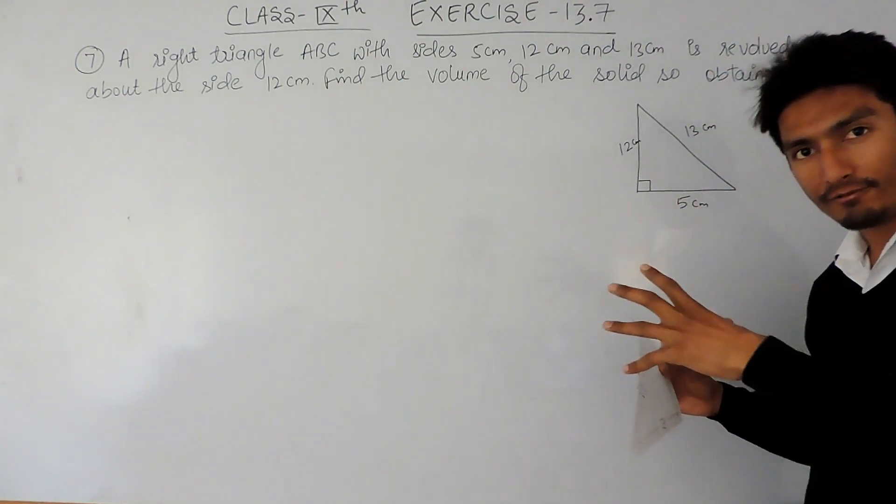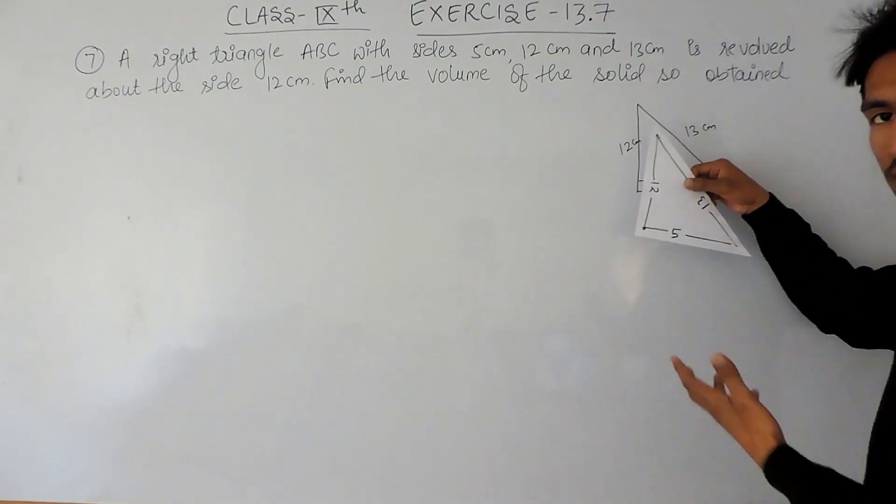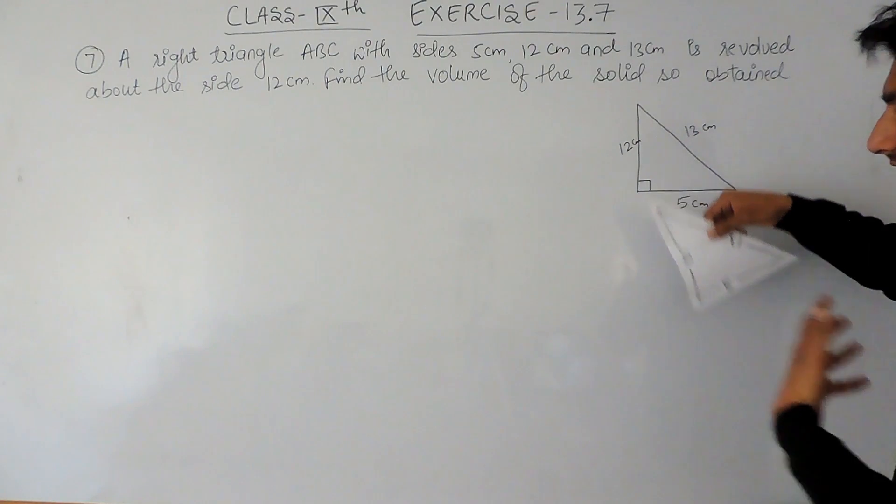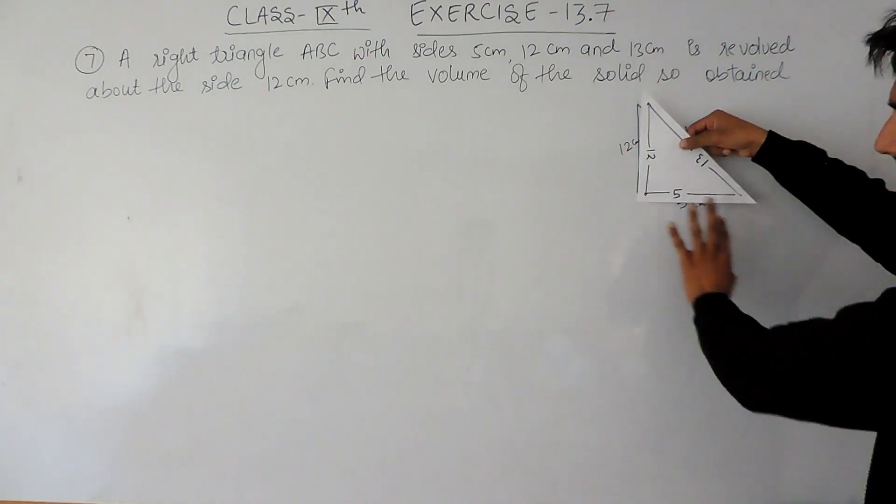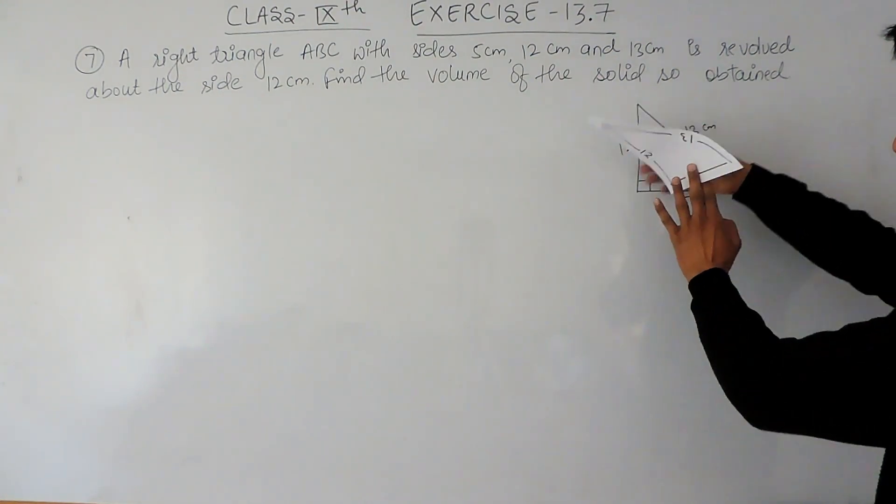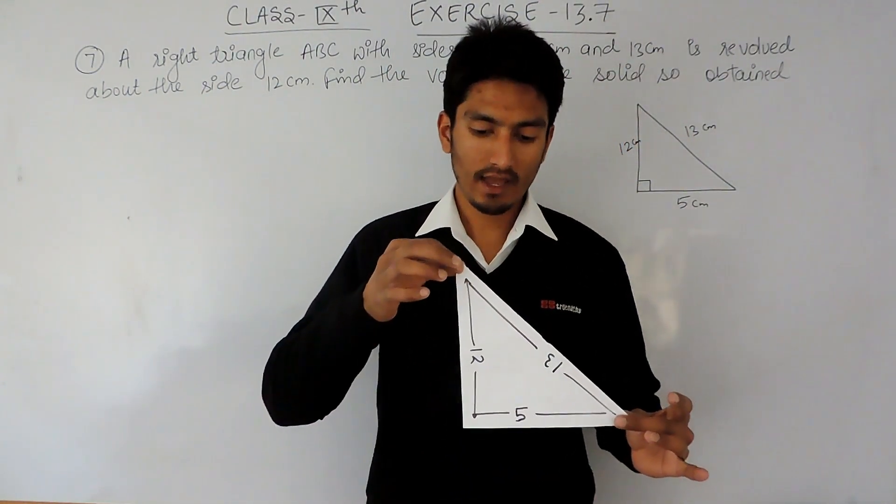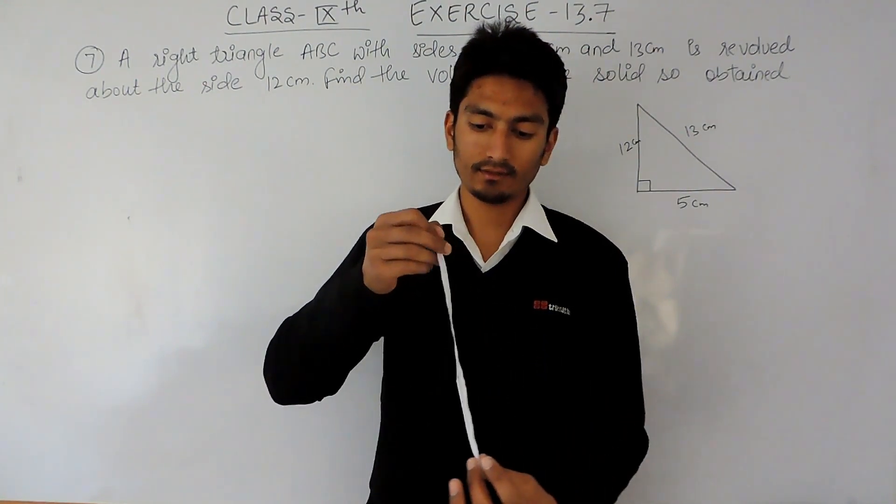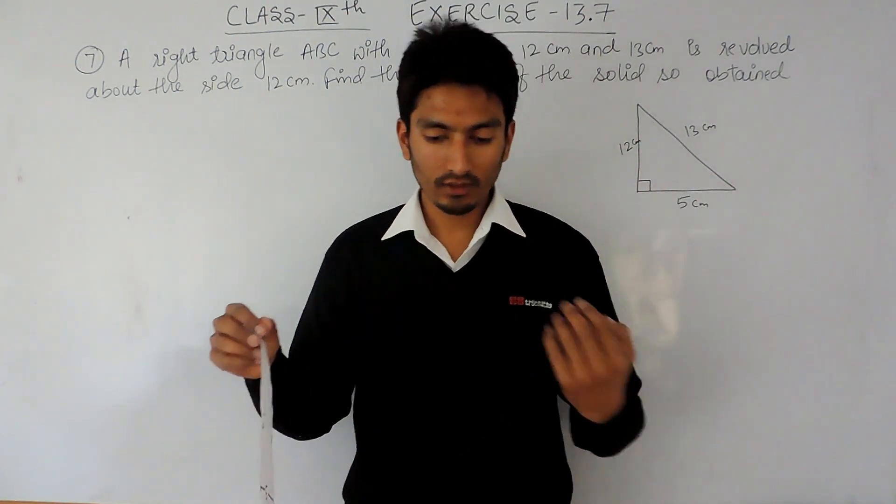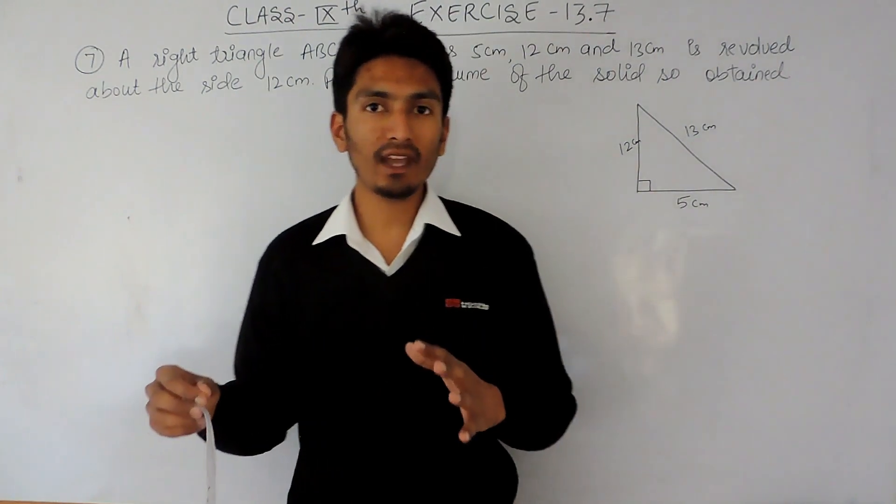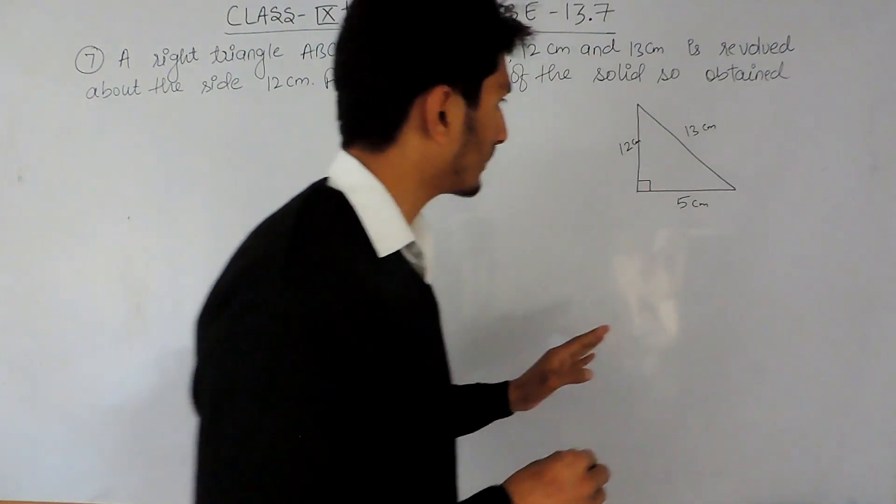So the 3D figure formed will be a cone. Please imagine this, because without imagination I cannot explain to you how this is formed. So this triangle is rotated, and when you imagine the 3D figure formed will be a cone, where this triangle is revolved above this side.